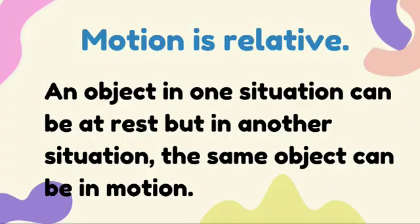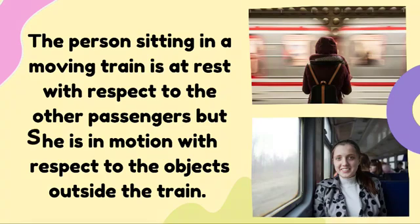Motion is relative. An object in one situation can be at rest, but in another situation, the same object can be in motion. For example, consider a person sitting on a moving train. The person sitting in a moving train is at rest with respect to the other passengers, but he is in motion with respect to the objects outside the train. The motion of an object is always said to be relative to an observer or something at rest.